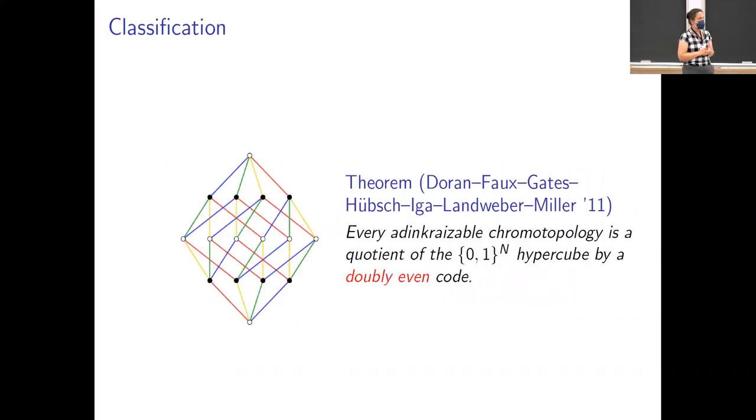There's a classification theorem for chromo-topologies, which is that every single one is going to be some kind of appropriate quotient of a hypercube. So what I have drawn here on my slide, this is an n equals four hypercube in the sense of a chromo-topology. And I could get anything else with this number of colors by taking appropriate quotients of it.